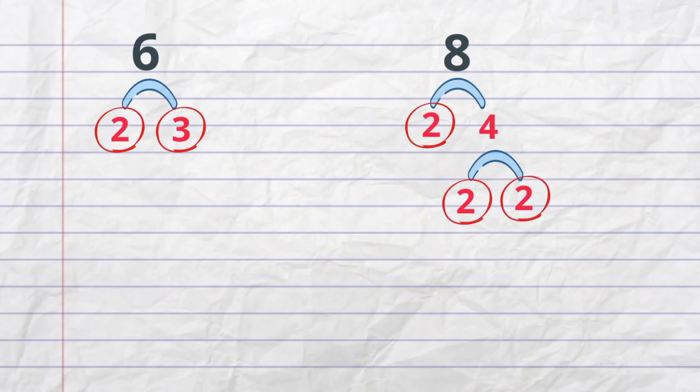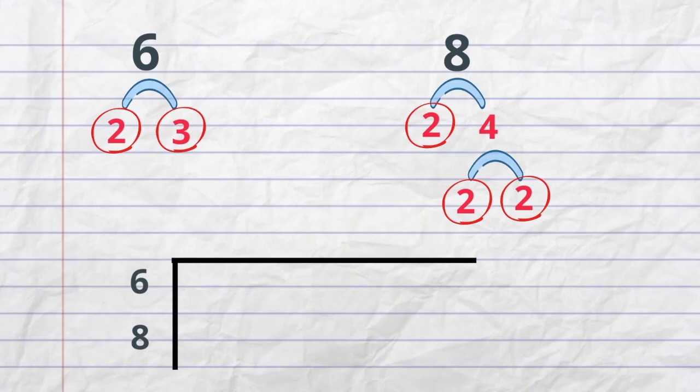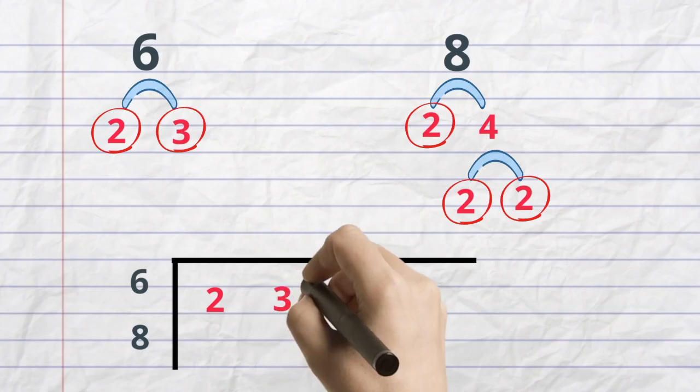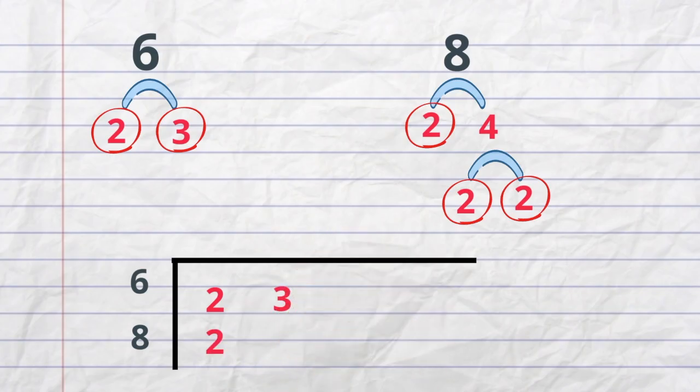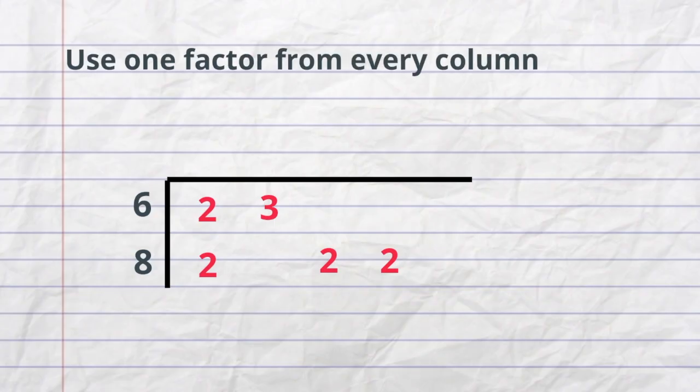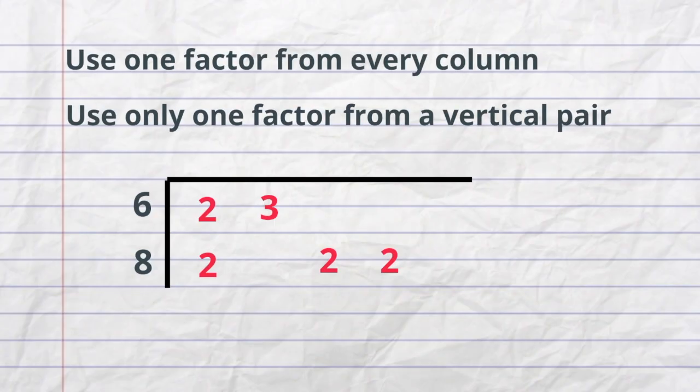Next what I will do is create a prime factorization chart. So with 6, I will write 2 and 3. With 8, I will write 2, skip a space and then write 2 and 2. Now what I need to do is apply these two simple rules. First, use one factor from every column. Second, use only one factor from a vertical pair.